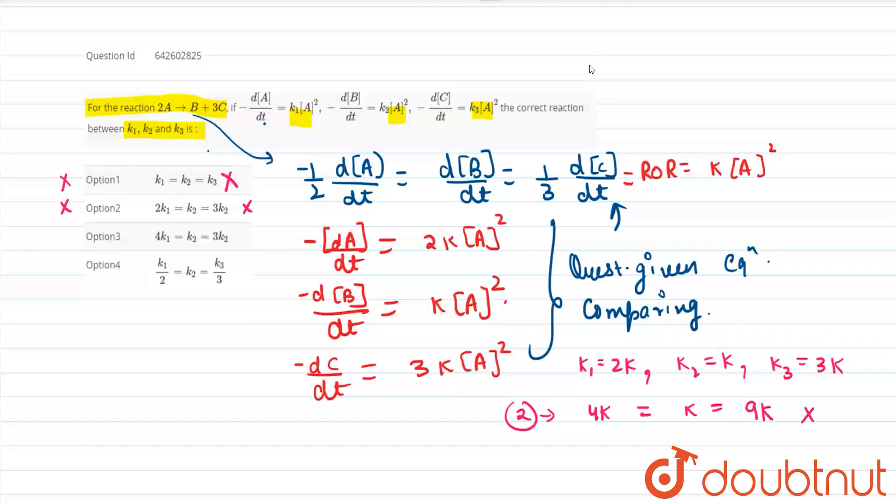Coming to the third option. Now friends, what is it saying in the third option? That 4 times k1, so it will be 8k. In the third option it will be 8k equals to k2. K2 is equals to k. It is equals to thrice k3. It is equal to 9k. So this is again a wrong option. This is also not correct.